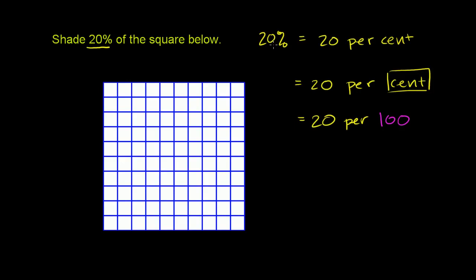20% means if we want to shade 20%, that means if you break up the square into 100 pieces, we want to shade 20 of them, 20 per 100. So how many squares have they drawn here? If we go horizontally right here, we have 1, 2, 3, 4, 5, 6, 7, 8, 9, 10 squares.